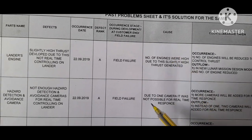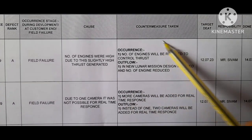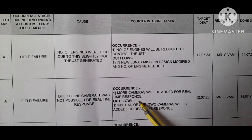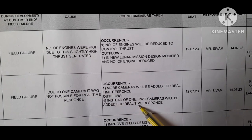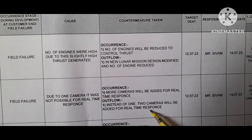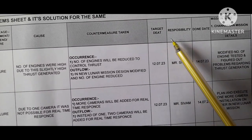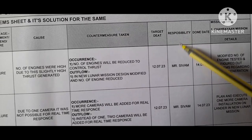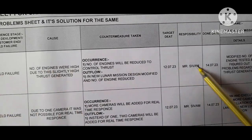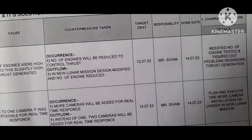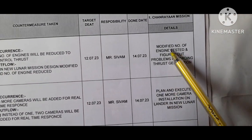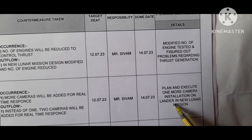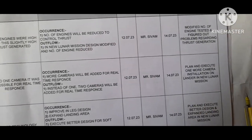Counter measure taken: more cameras will be added for real-time response. Outflow: instead of one camera, two cameras will be added. Target date, responsible person name, and done date are also given here. The responsible person is whoever is accountable for this problem and its avoidance. Details: plan and execute installation of one more camera on the lander in the new lunar mission.